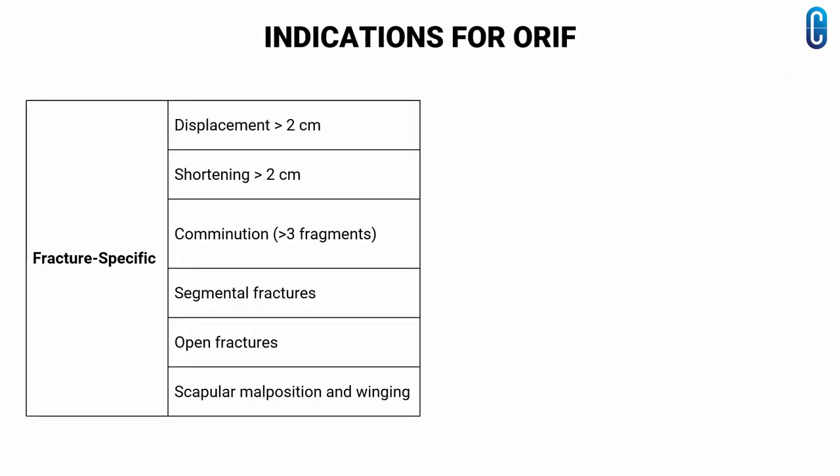The relative indications for primary fixation of mid-shaft clavicular fractures are as follows. First, the fracture-specific indications: displacement more than 2 cm, shortening more than 2 cm, comminution, segmental fractures, open fractures or impending open fractures with soft tissue compromise, and scapular malposition and winging at initial examination.